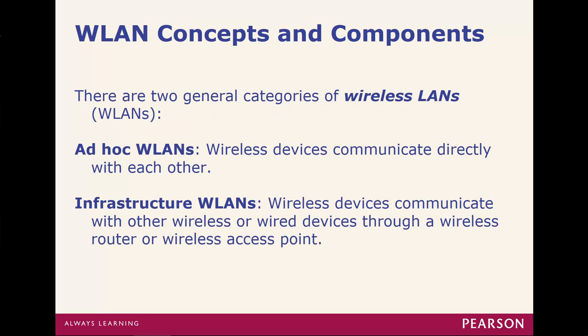First and foremost, there are two major components when we talk about wireless LANs — two major categories: ad hoc and infrastructure LANs. Ad hoc is wireless devices communicating directly with one another — for example, iPhone AirPlay. That's a one-to-one connection with no centralization. Infrastructure, on the other hand, has devices communicating with one another through some type of centralized access point.